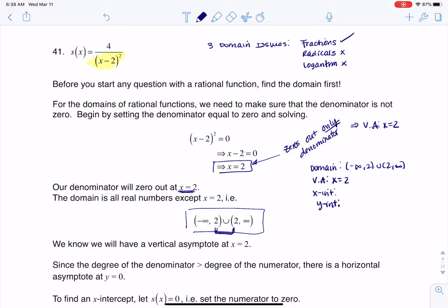If I want to find the y-intercept, plug an x value of 0 in. So I would get 4 over 0 minus 2 squared, and that would be 4 over 4, which is 1. If you want to find the x-intercepts, you need to set your function equal to 0. The only way for a fraction to be 0 is if the numerator is 0. But the numerator is 4, and 4 doesn't equal 0 ever, so I don't have any x-intercepts.